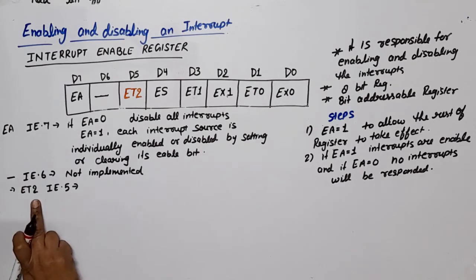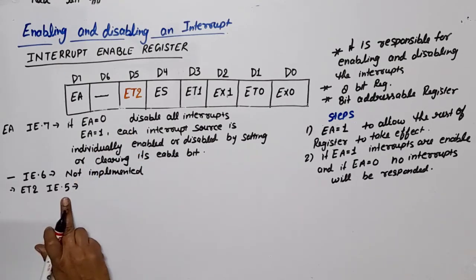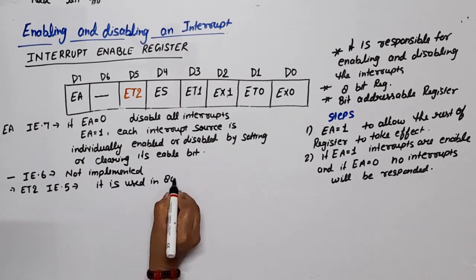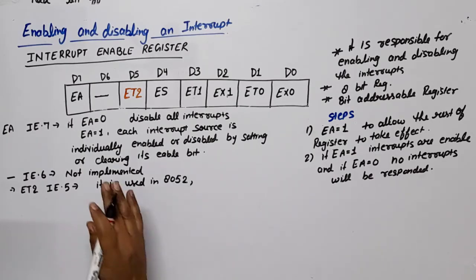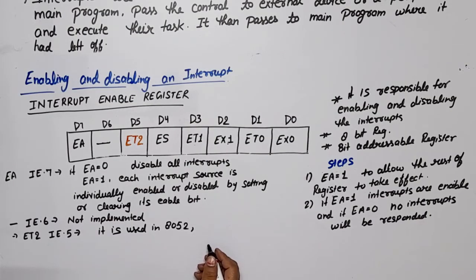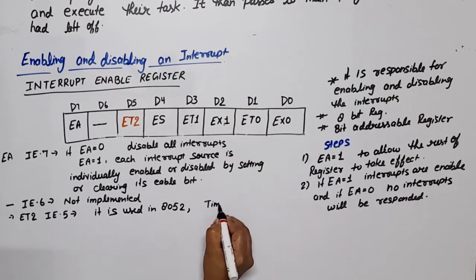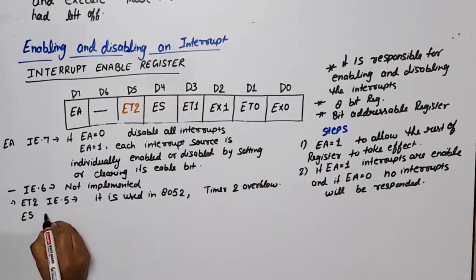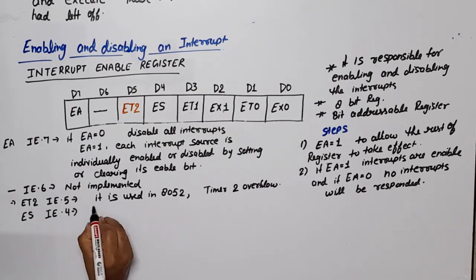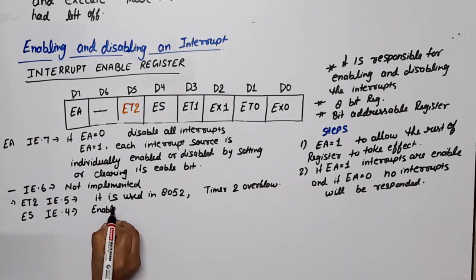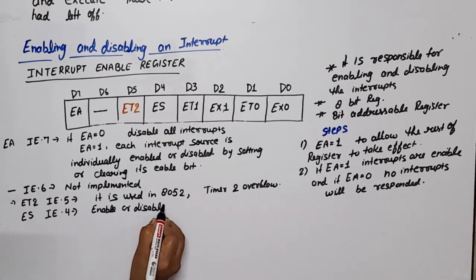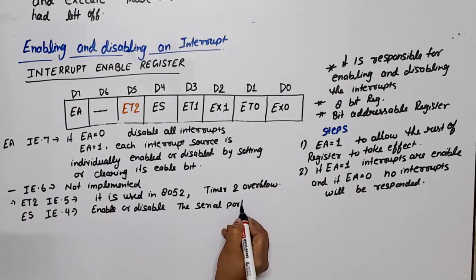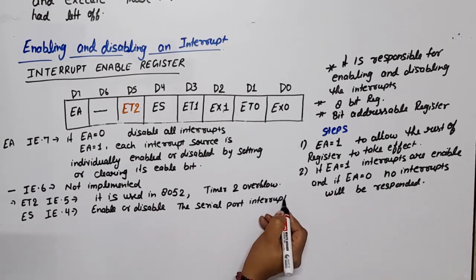IE.6 is a don't-care bit — not implemented, so we generally keep it 0. Next, ET2 at IE.5 is used in the 8052, not in the 8051, so you can ignore this — it is for Timer 2 overflow. Next is ES at IE.4, which is responsible for enabling or disabling the serial port interrupt.